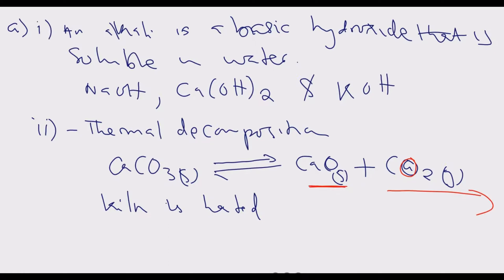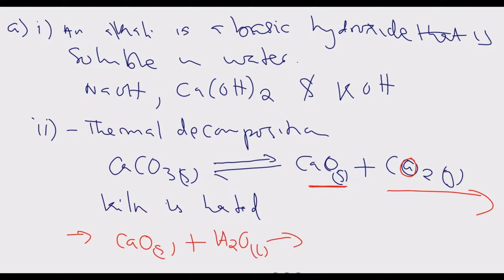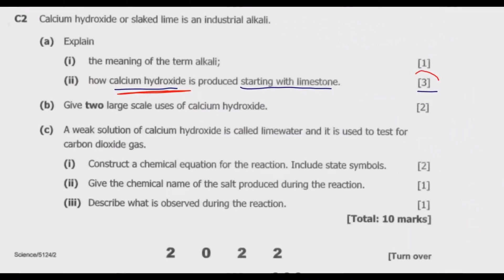In step two, slaked lime is formed by reacting the lime — calcium oxide — with water. Calcium oxide (solid) reacts with water to give calcium hydroxide (aqueous solution). This is how you arrive at slaked lime, and this explanation earns the three marks.